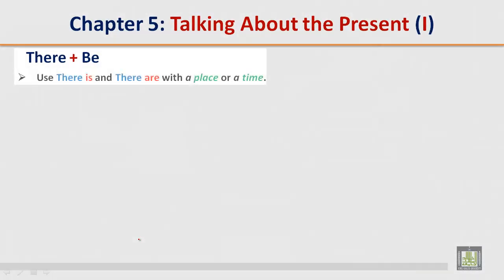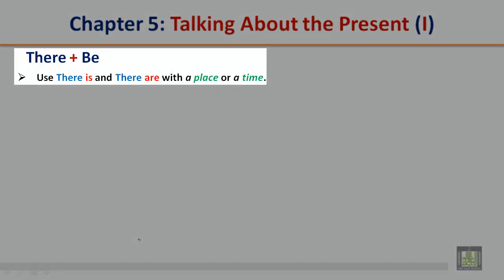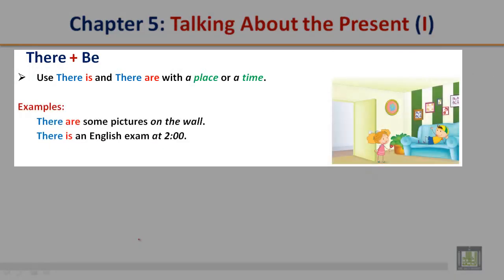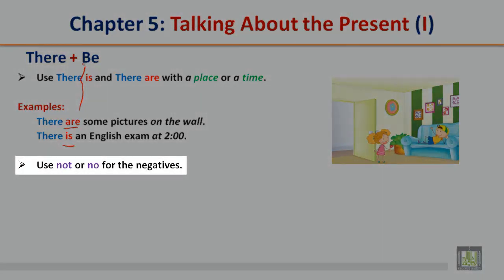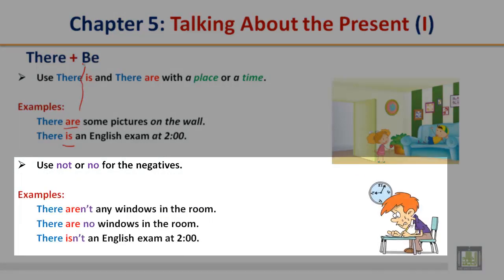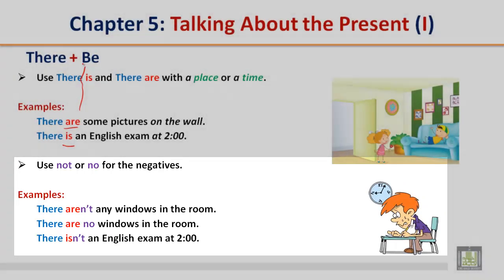There plus be. Use 'there is' and 'there are' with a place or a time. Examples: There are some pictures on the wall. There is an English exam at 2. 'Is' and 'are' are examples of 'be.' Use 'not' or 'no' for the negatives: There aren't any windows in the room. There are no windows in the room. There isn't an English exam at 2 o'clock.